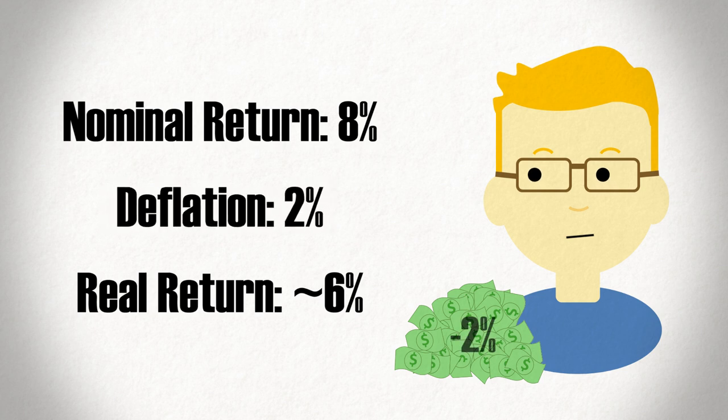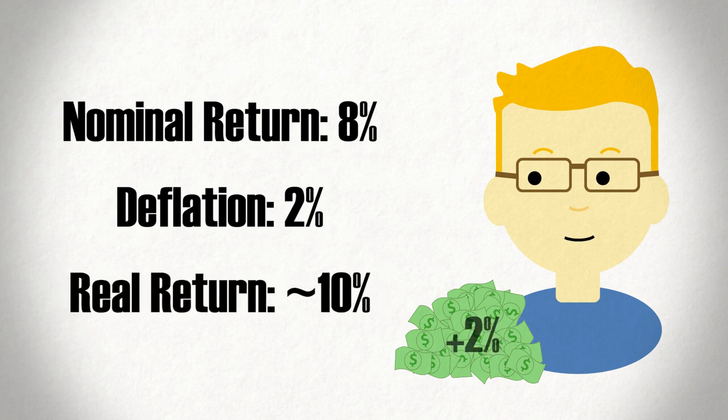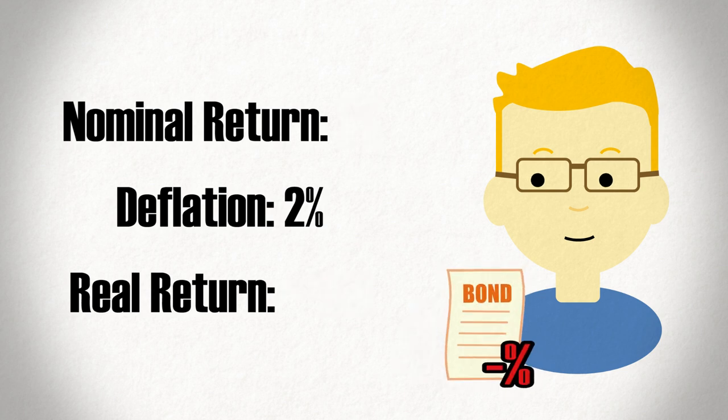But if we instead have deflation of 2%, then your return in real terms becomes roughly 10%. So investors who expect the economy to experience deflation may opt to own a bond with say a negative 1% yield if they know the real return will be a positive 1% with a 2% deflation rate.